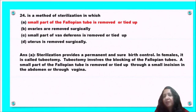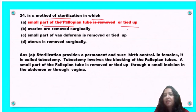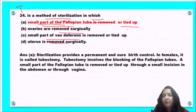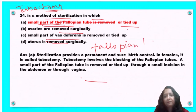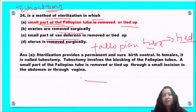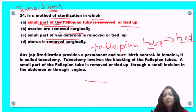Next question: which method of sterilization involves removal or tying of a small part of the fallopian tube? This is tubectomy. In tubectomy, the fallopian tube is blocked — a small part is removed and tied through a small incision — so that the ovum cannot be fertilized, thus preventing fertilization. So tubectomy is the method of sterilization in which a small part of the fallopian tube is removed or tied up.